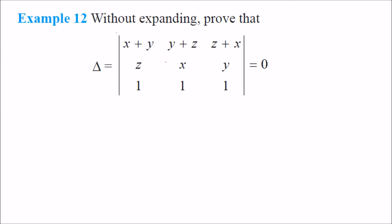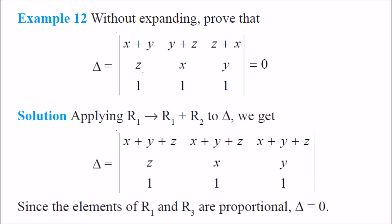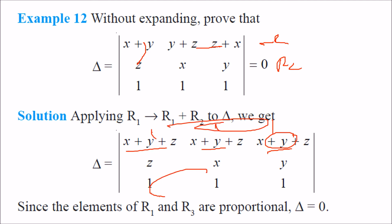Next example: without expanding, prove a determinant equals 0. We apply R1 → R1 + R2, which gives x+y+z in every position of the first row. Taking x+y+z as common leaves 1, 1, 1 in the first row. Since two rows become equal, the result is 0.